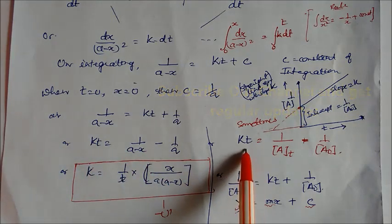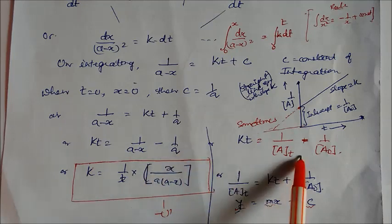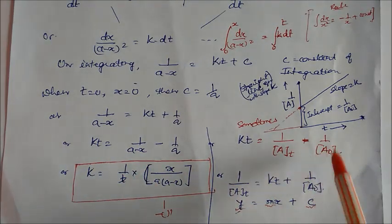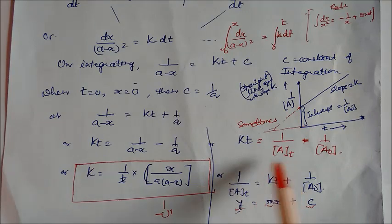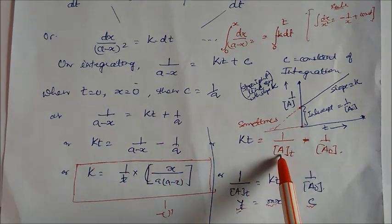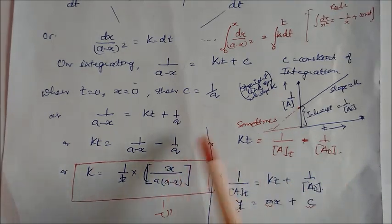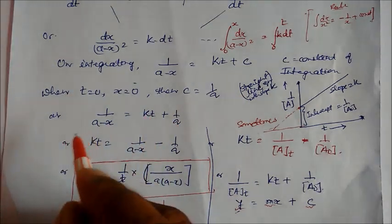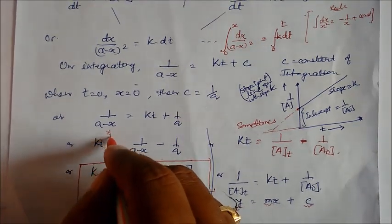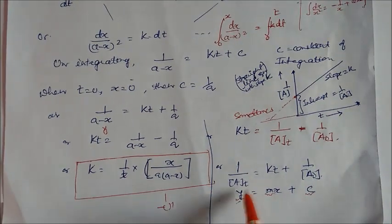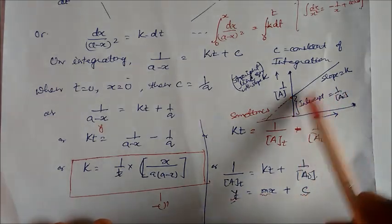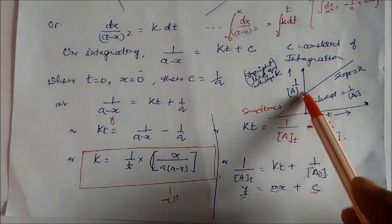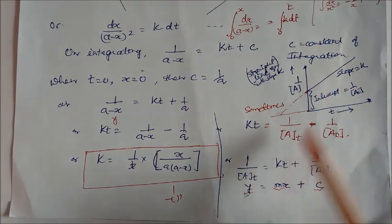Alternatively, Kt can be written using concentration at time t (denoted Aₜ) and initial concentration A₀, where A−x represents remaining reactant. This equation can be used in the form of a straight line: y = mx + c. Plotting 1/[A] versus time gives a straight line with slope K and intercept 1/A₀.